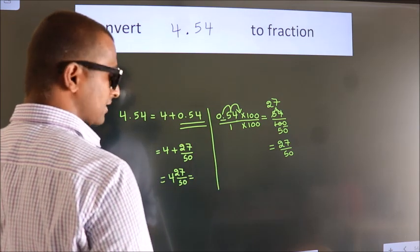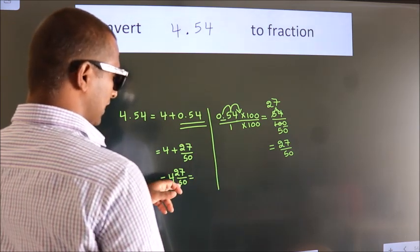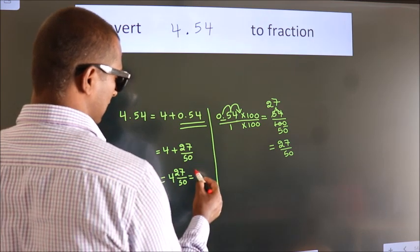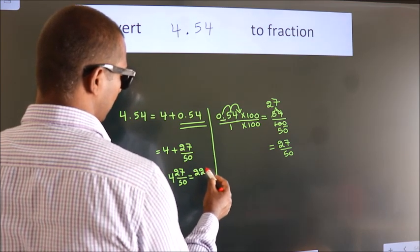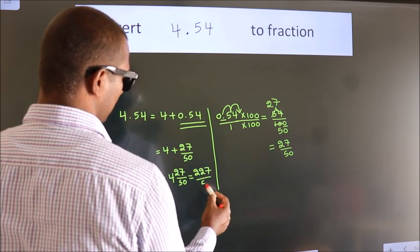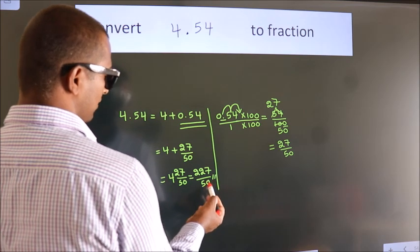And in improper fraction, it is 4 into 50, 200 plus 27, 227. 227 by 50 is our fraction.